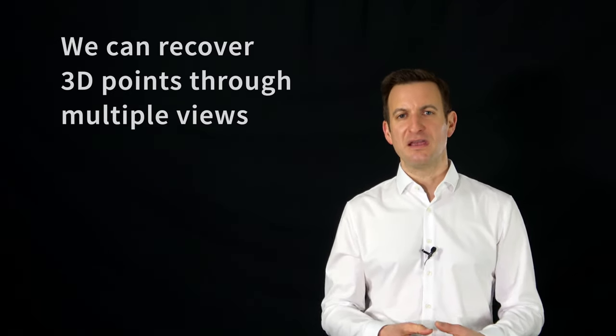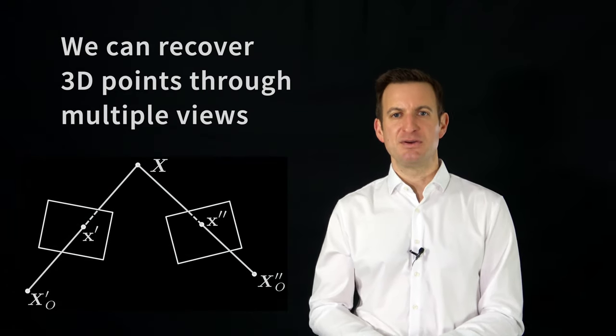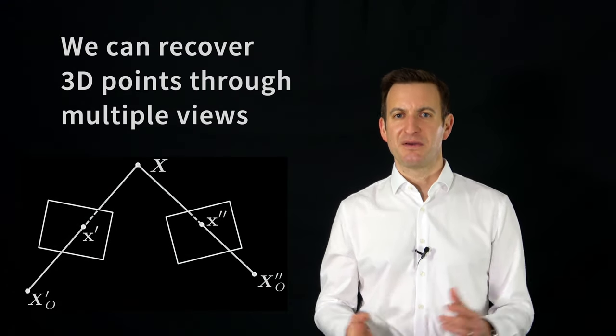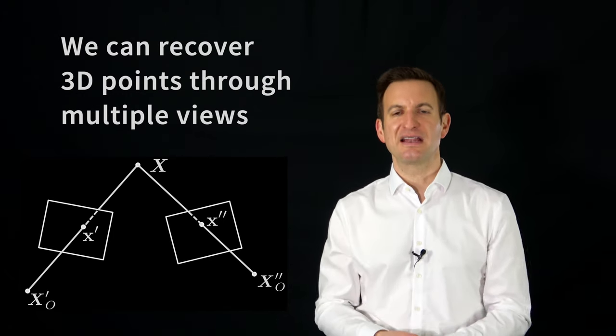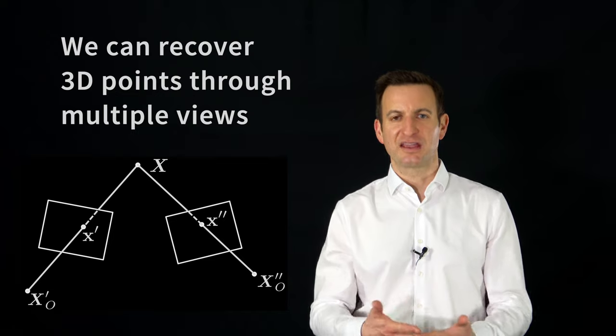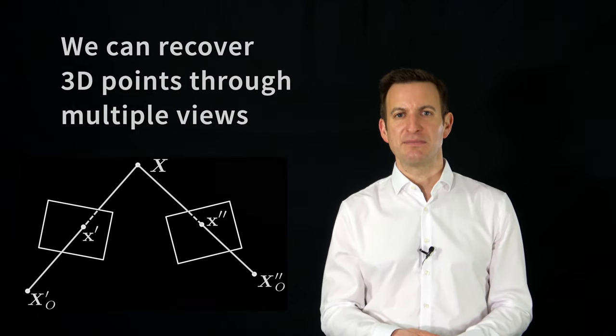And this is something we can use to recover 3D coordinates of points if we combine multiple camera images from different locations. Because if you have, for example, an observation taken from two different locations, we basically have two straight lines in space, and where those lines intersect, that should be the location of that 3D point. I hope that was useful. Thank you very much for your attention.